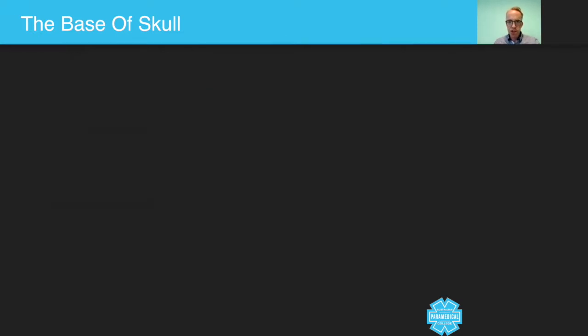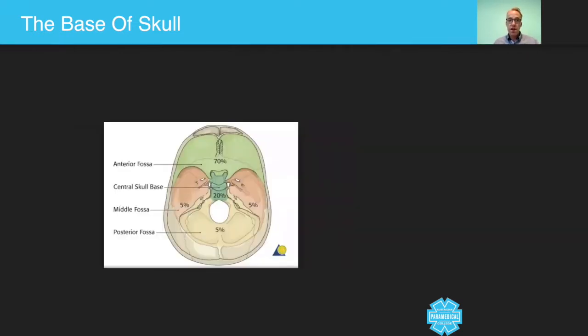To make the base of skull dead easy, what you need to consider is that there are, for the base of skull, there's an anterior fossa, anterior meaning at the front. The opposite is the posterior fossa, meaning at the back. You've got the middle fossa and the central skull base. So there's only really four parts to the actual base of skull.